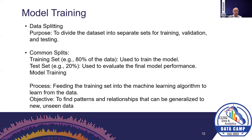The first step in model training is dividing the dataset into training, validation, and testing. Typically 70 to 80% of the data is set aside for training and maybe 5% for validation, which is used during the training phase. After training is done, we use the model on test data it has not seen to evaluate the model. The common split ratio is 80/20 or 70/30, depending on the dataset.